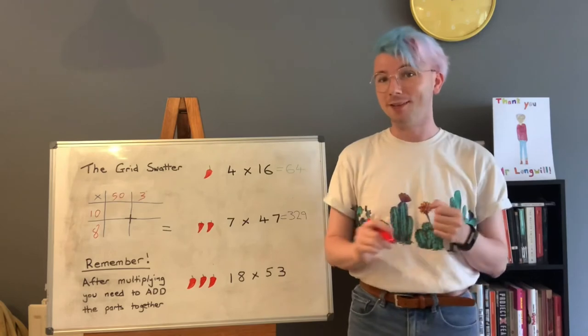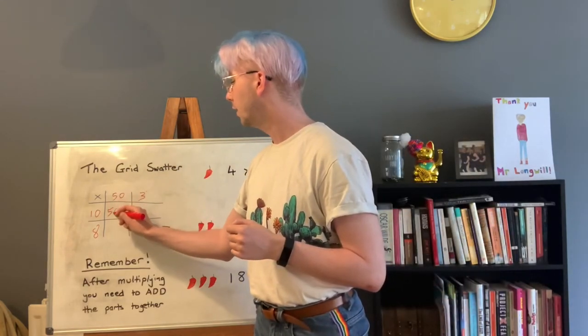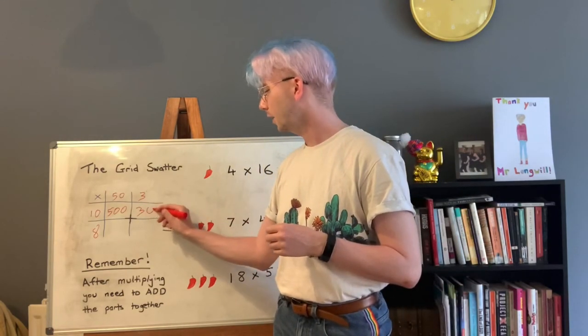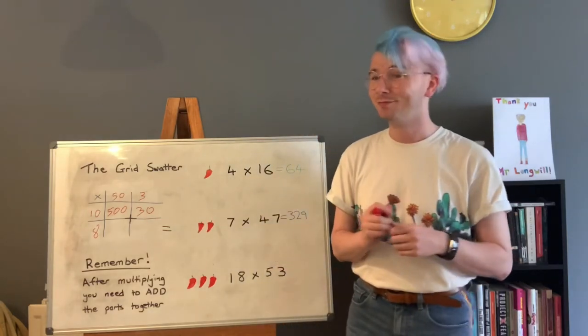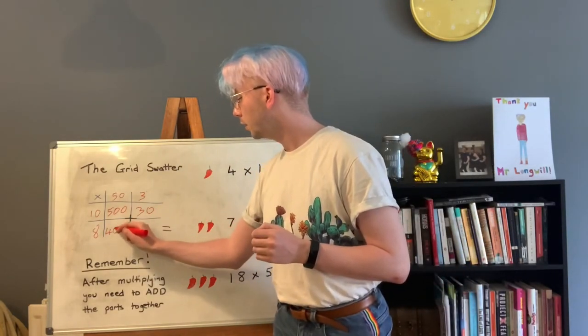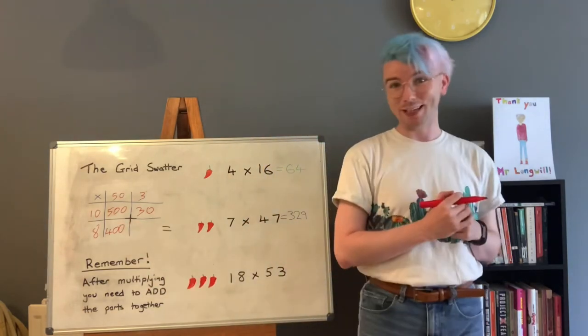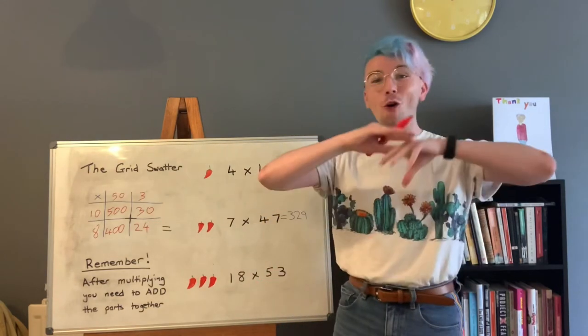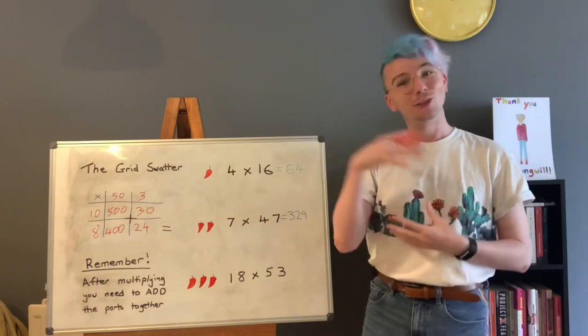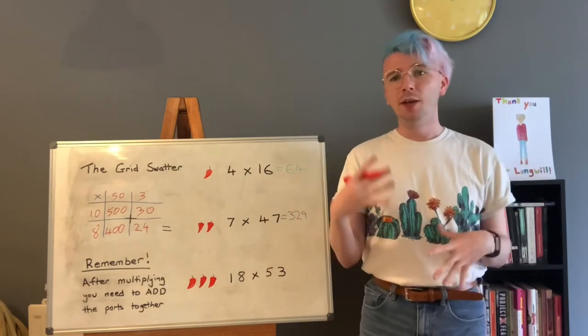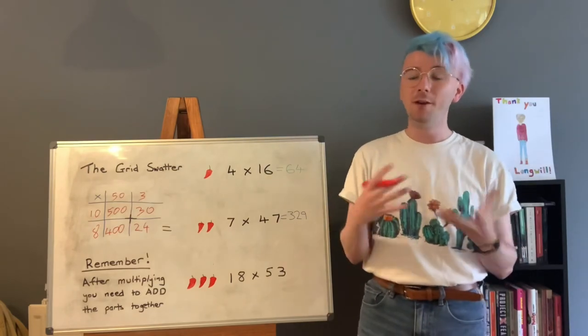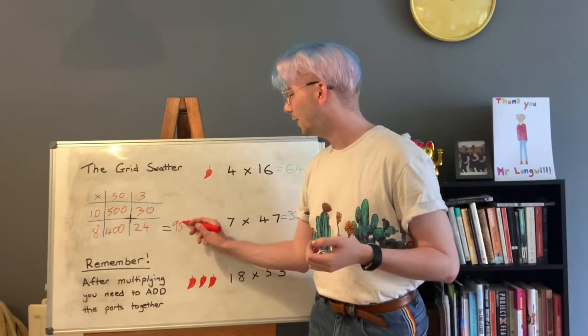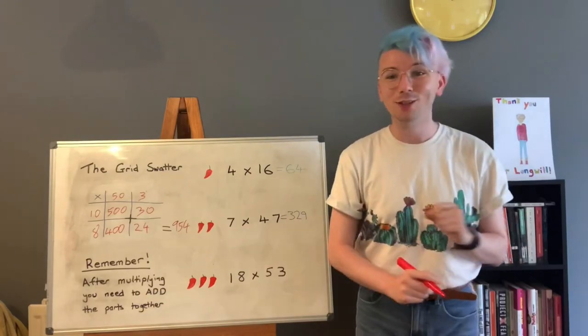But let's see what happens when we do these multiplications and then add it all together. So what is 50 times 10? That's 500. What is 3 times 10? 30. What is 8 times 50? That's 400. And what is 8 times 3? That's 24. Now remember we need to add all four of those parts together now to get our final answer. So 500 plus 400 is 900. 30 plus 24 is 54. 900 plus 54 is 954. And that is the answer to our hot solution.